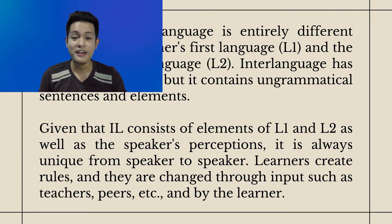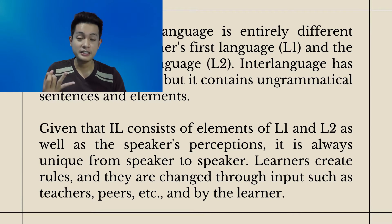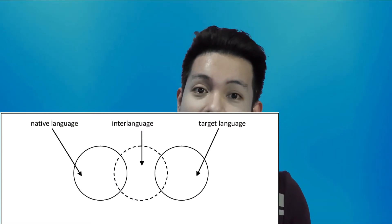Given that interlanguage consists of elements of L1 and L2 as well as the speaker's perceptions, it is always unique from speaker to speaker. Learners create rules and they are changed through input such as teachers, peers, and sometimes by the learner themselves. Interlanguage is a system used by a person learning a new language — L1 is the native language and L2 is the new language. In interlanguage theory, learners usually create their own rules called L3, a combination of L1 and L2, which may differ in accent, phonology, syntax, and many others.